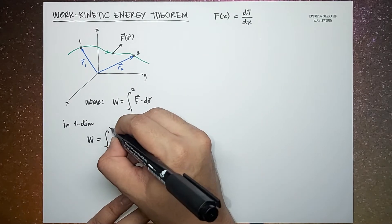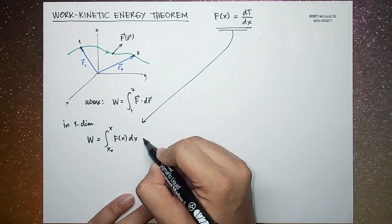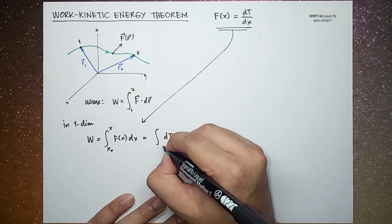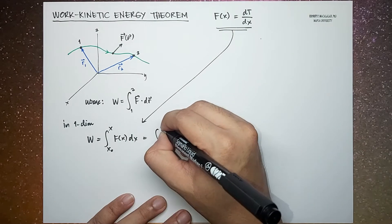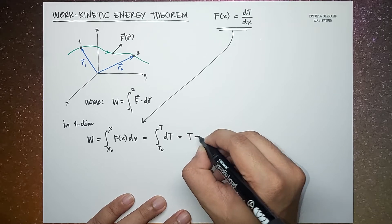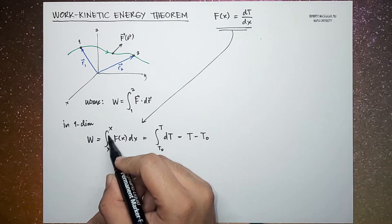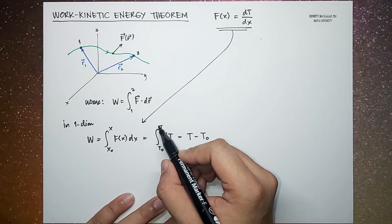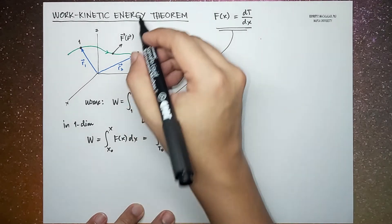From here we can see that this integral is actually equal to the integral of dT, from the initial kinetic energy to the final kinetic energy, which gives us the difference between the final and initial kinetic energy. Here, x-naught and x are the initial and final positions of the particle, and correspondingly T-naught and T are the kinetic energies at those positions. Hence, we state the work-kinetic energy theorem.